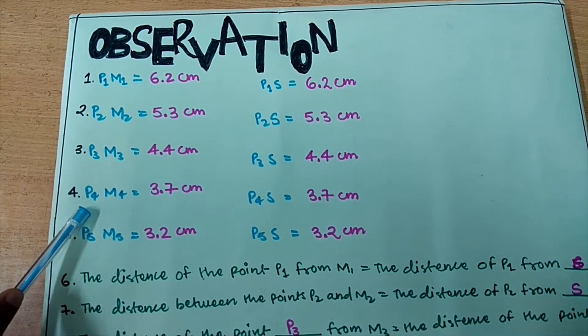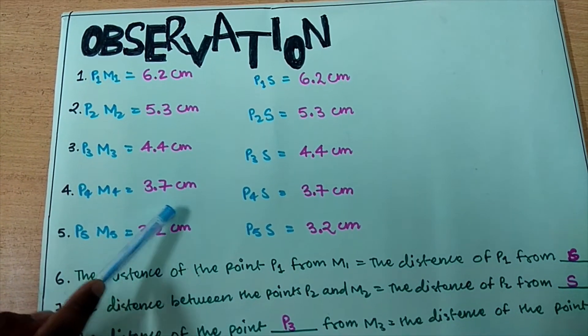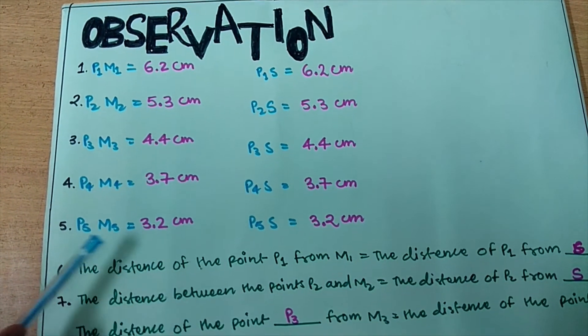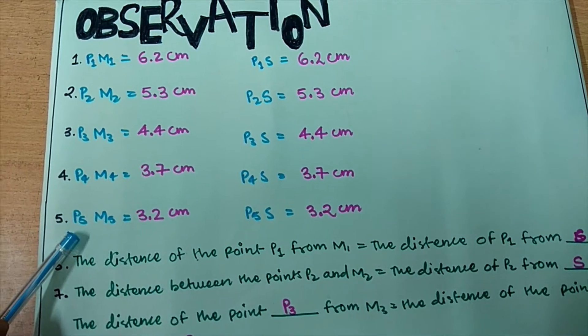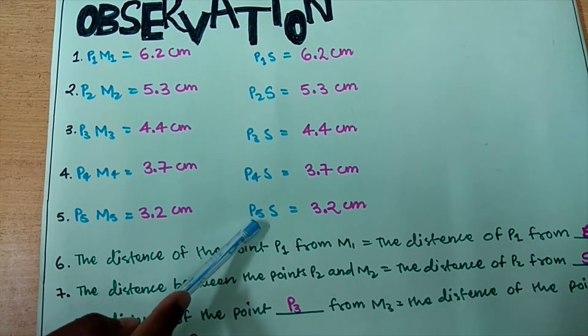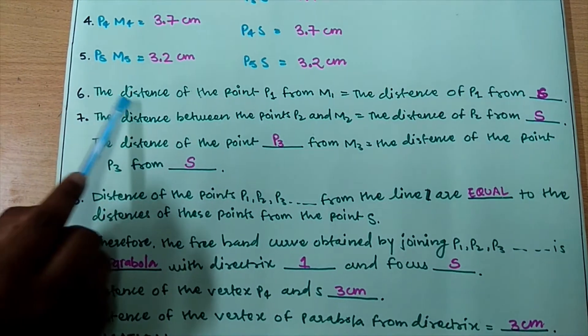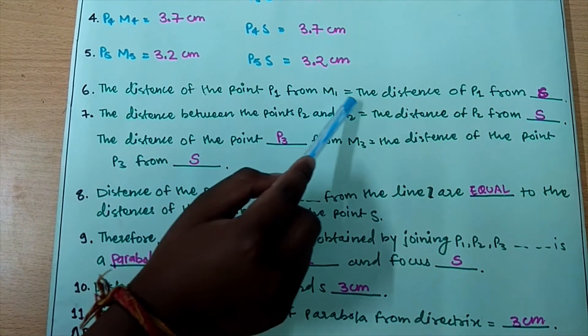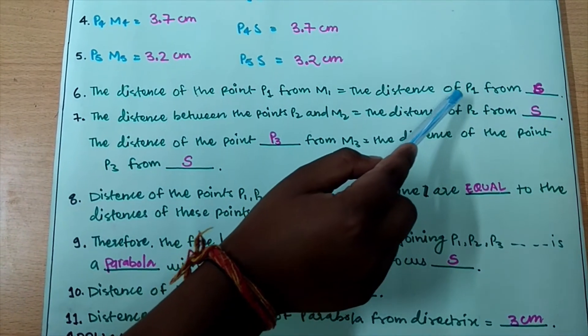Observation: P4M4 is equal to 3.7 cm and P4S is equal to 3.7 cm. P5M5 is equal to 3.2 cm and P5S is equal to 3.2 cm. The distance of the point P1 from M1 is equal to the distance of P1 from S.